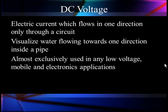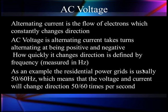Let's start with plain DC voltage, just to get some of this terminology out of the way. It's electrical current which flows in one direction through a circuit. It flows from minus to plus. It's like visualizing water flowing in one direction inside a pipe. It's almost exclusively used in any low-voltage mobile electronic application. We don't use it in household electrical, and we'll tell you why later.